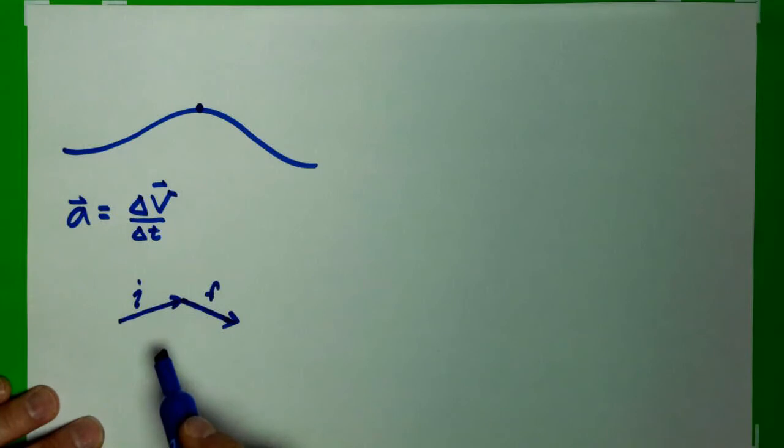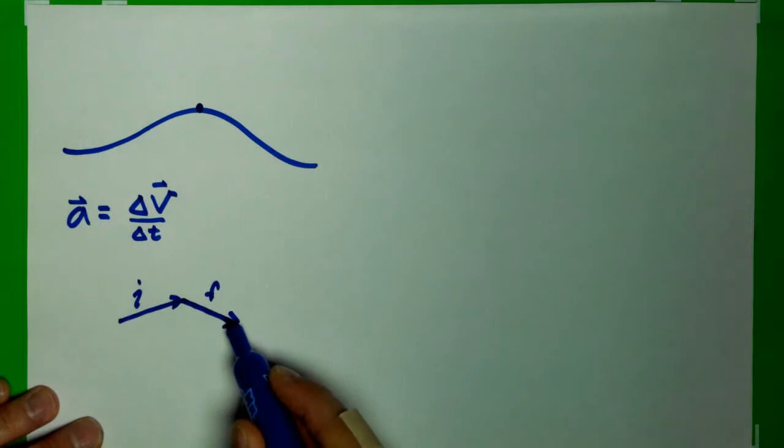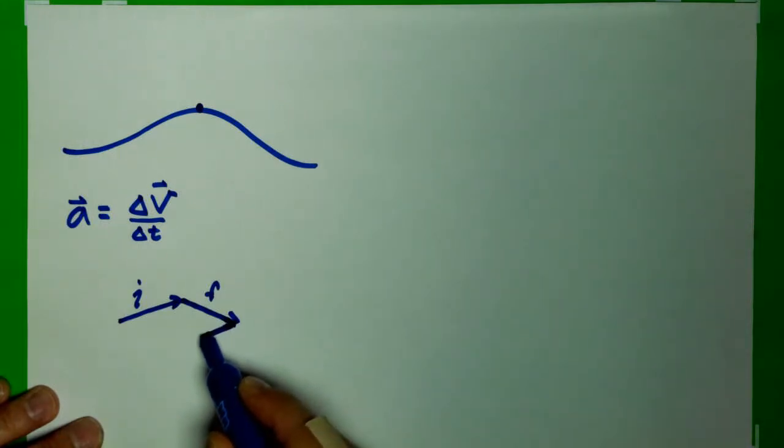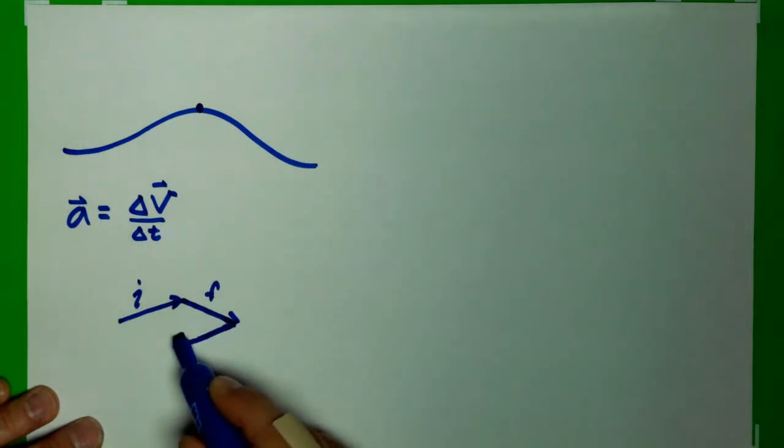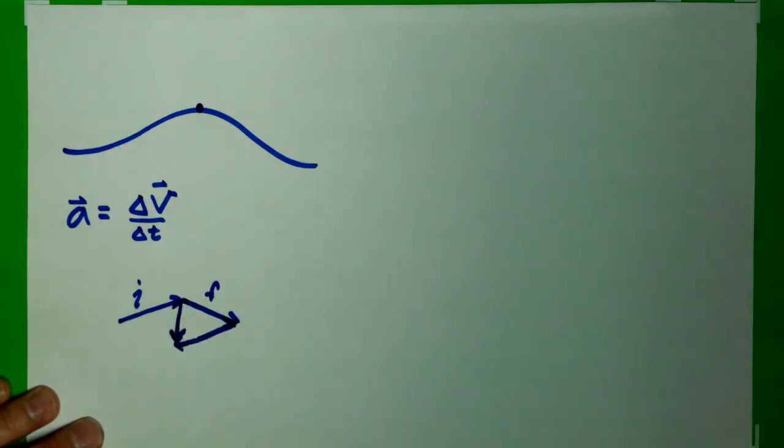And so if I want to find the change in velocity, final minus initial, I reverse this one and then add it to the tip of this one, which gives me a vector that points that way. So here's my negative initial, and this is my change right there.